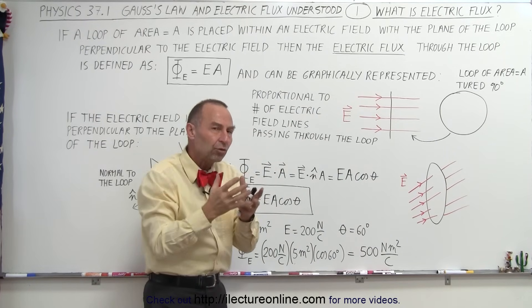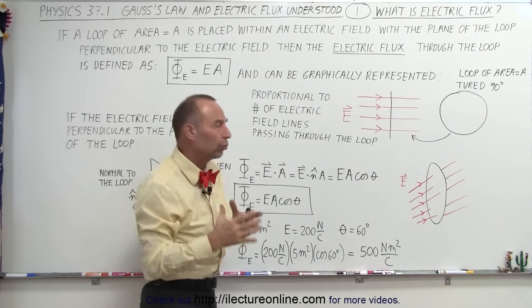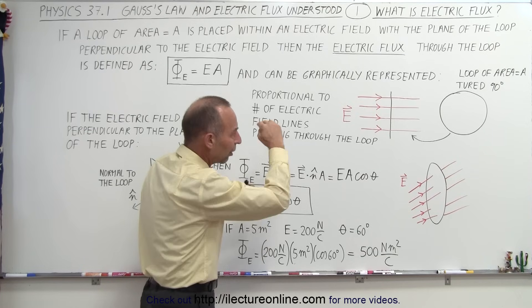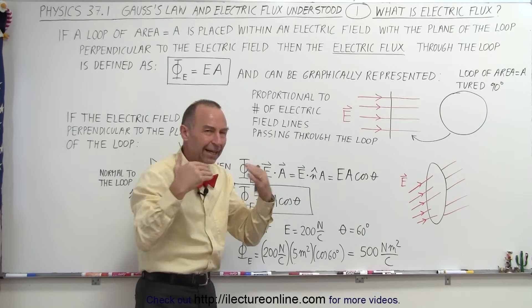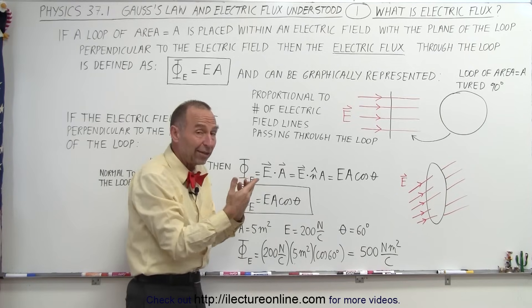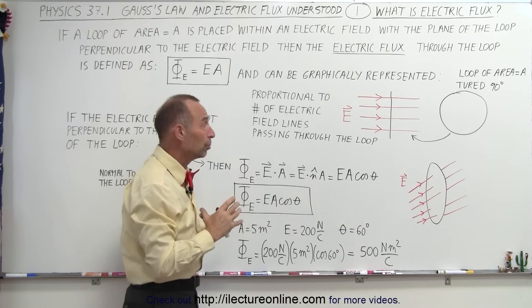Those are kind of synonymous to the flux, or at least proportional to the flux. The stronger the field, the more lines that we draw, so you can graphically imagine the more lines you see, the greater amount of flux that you have through the loop.